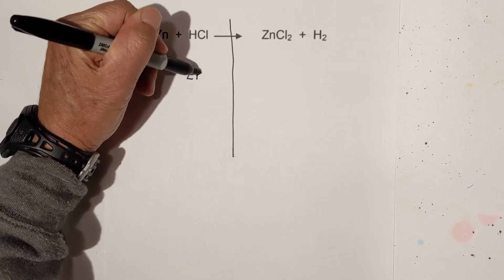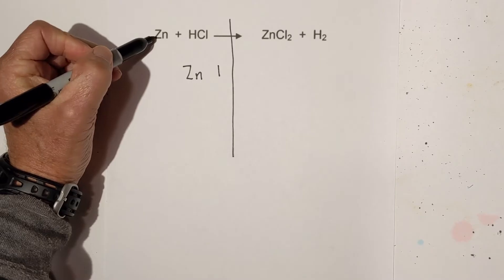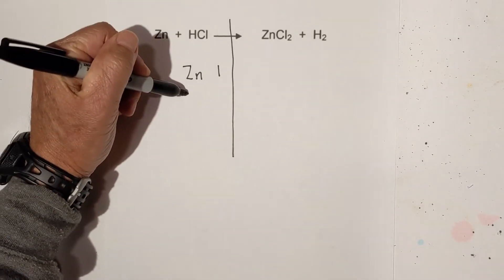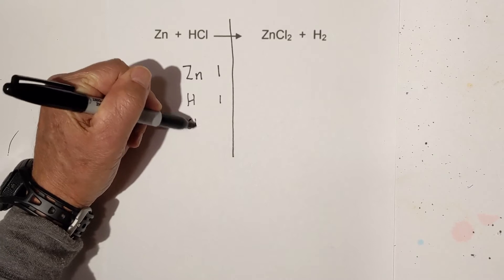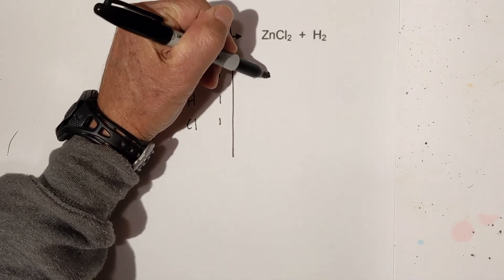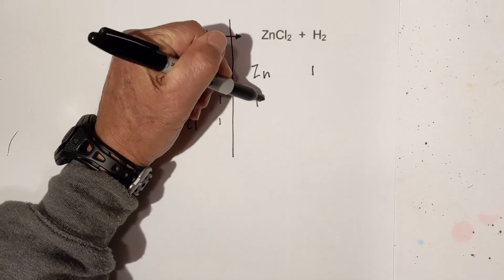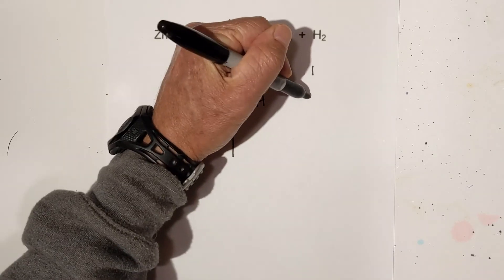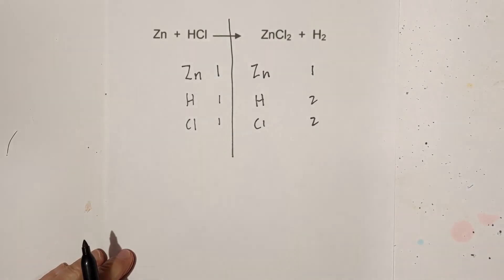We have zinc and it looks like we have one. Remember, anytime you have a capital letter that means you have a new element. We have hydrogen — we have one of those — and then we have one chlorine. Now on the other side: we have zinc, looks like we have one. Remember, a subscript applies only to that element. We have two hydrogens and then it looks like we have two chlorines.